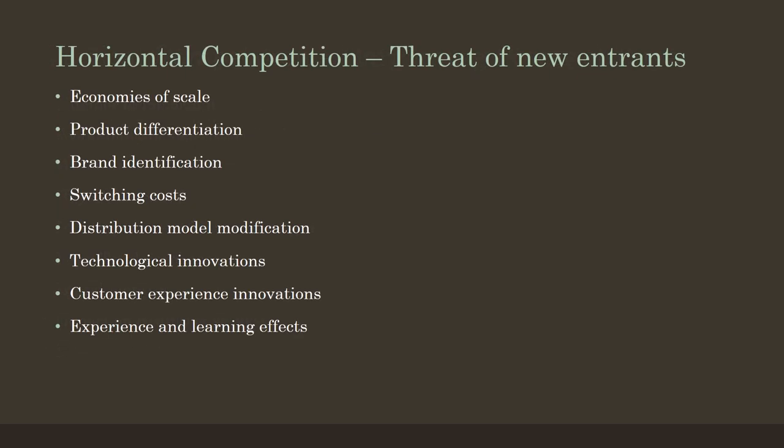The threat of new entrants is a force for any business, but it's not as high in some industries as others. It's going to be really hard for a new entrant soda company to come in and dominate the market. But in technology — think about marketing software or supply chain software — there are a lot of startups now building software solutions to compete for businesses and consumers. You have to look at economies of scale, how big your industry is, how many competitors are already out there, and product differentiation.